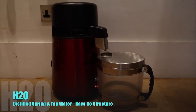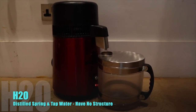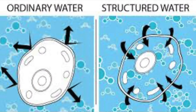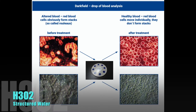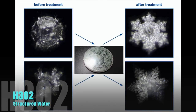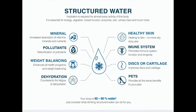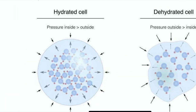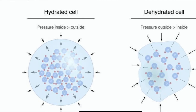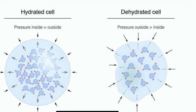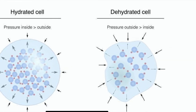Spring water we buy from the shops, tap water and distilled water do not have any structure — these waters are known as H2O. Structured water, H3O2, has many benefits such as hydration and detoxing impurities from our system. Electrolyte water found in our cells is structured, so by drinking structured water it means that we're giving ourselves the proper water they need to grow and regenerate.